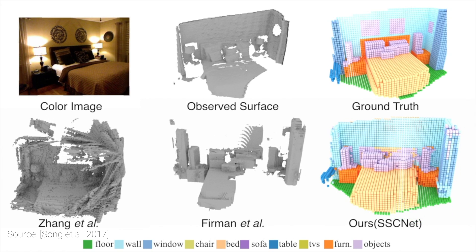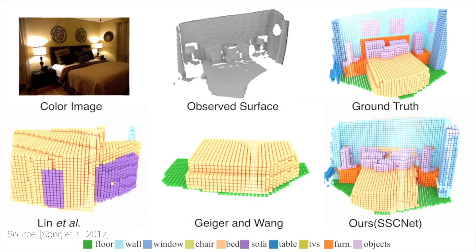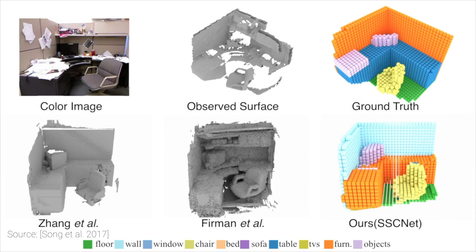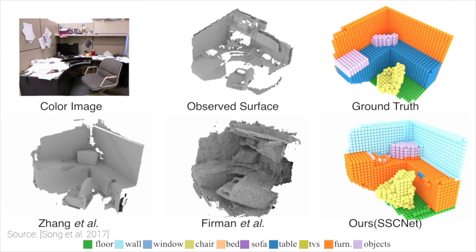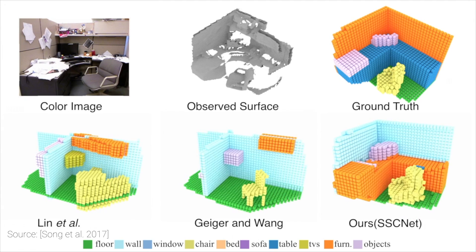But this is not all, because the semantic part means that the algorithm actually understands what we are looking at, and thus is able to classify different parts of the scene. These classes include walls, windows, floors, sofas, and other furniture.